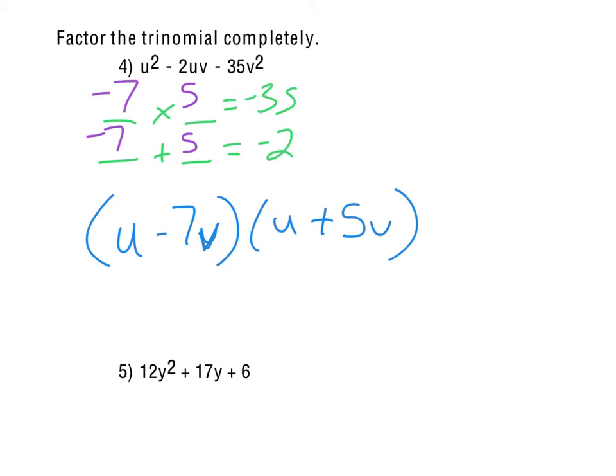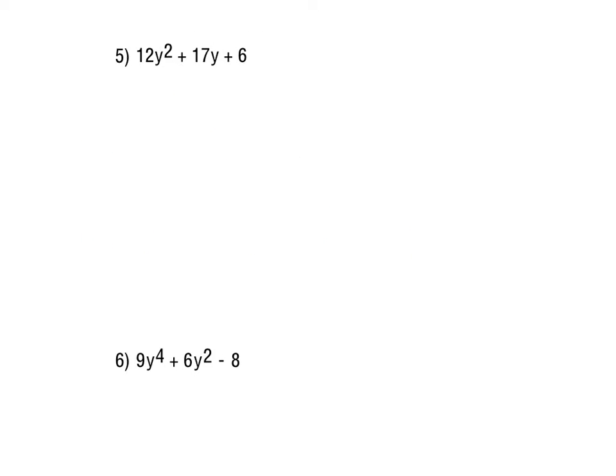And u plus 5v is all. So yeah, don't let the u's and v's mess you up. With the number 5, again, there's no special patterns. It is a 12y² though, so we'd have to look at the factors for 12, which there's a few, and then the factors of 6.